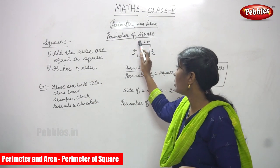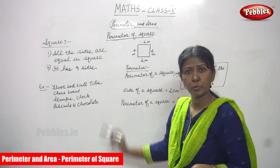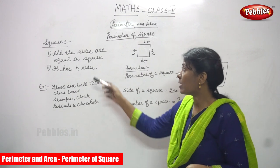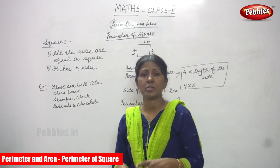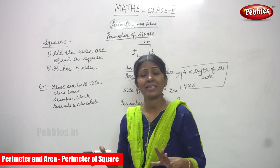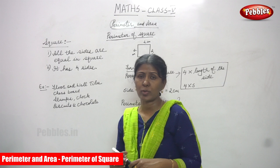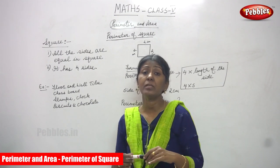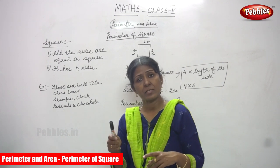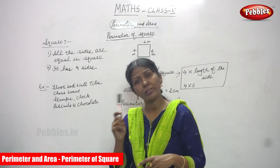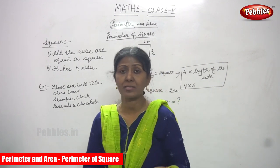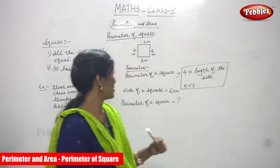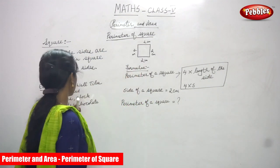1, 2, 3, 4 — so altogether 4 sides. All the sides are equal in a square. For example, one side is 2 cm, so all the 4 sides are also 2 cm. That is the meaning of that property.